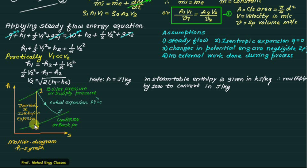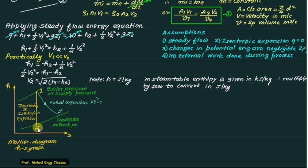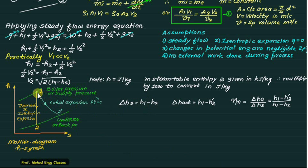The theoretical enthalpy drop is from 1 to 2, while the actual expansion drop is from 1 to 2-dash. The loss in enthalpy is due to friction. For actual expansion, the process follows pv^n, where n is the index of expansion. The value h1 minus h2-dash is always less than h1 minus h2. We define delta-hs as h1 minus h2, delta-actual as h1 minus h2-dash, and the nozzle efficiency as delta-actual divided by delta-hs, i.e., (h1 minus h2-dash) divided by (h1 minus h2).